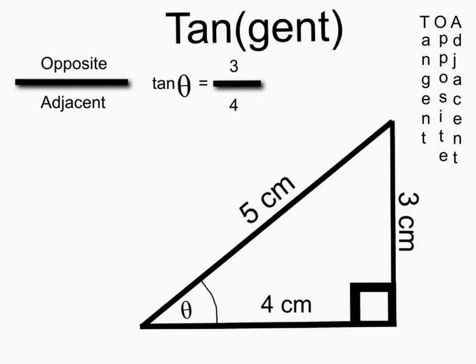Tangent is the opposite side divided by the adjacent side. In this case, tangent theta is 3 over 4. An easy way to remember, tangent is TOA, which stands for tangent opposite adjacent.